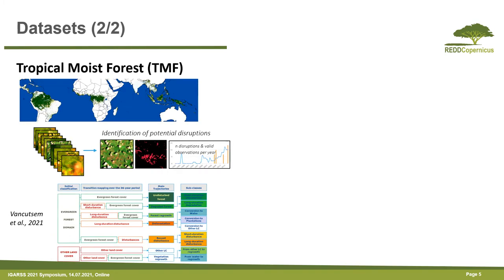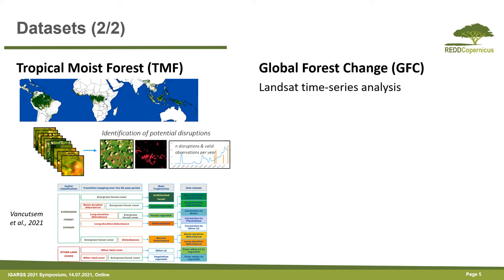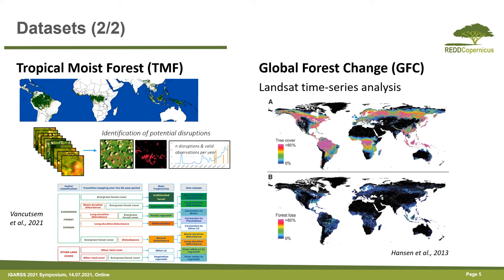Recently, the Tropical Moist Forest products have been released, which provide information on forest status and forest change from 1990 to 2020. This is based on image classification and identification of potential disruptions, providing information on deforestation and degradation at Landsat level. As a global reference, we also have the Global Forest Changes, based on Landsat time series analysis, producing tree cover data for 2000 and forest loss from 2000 to 2020.